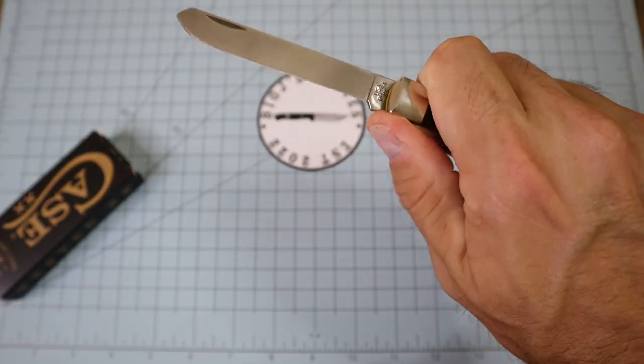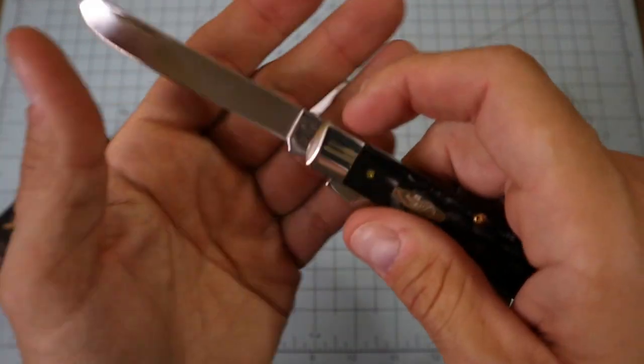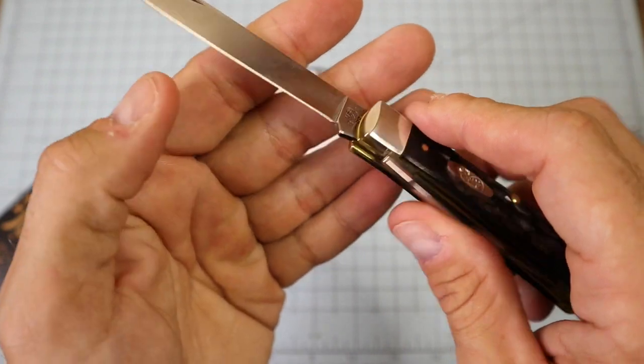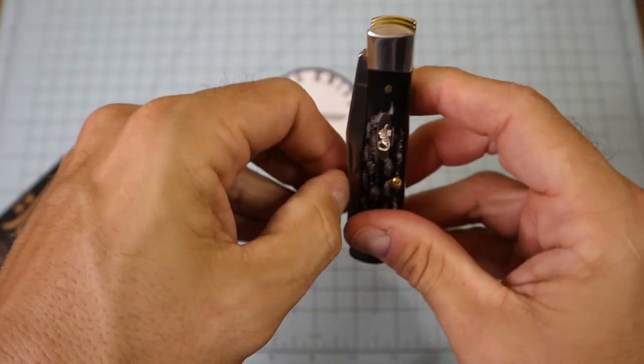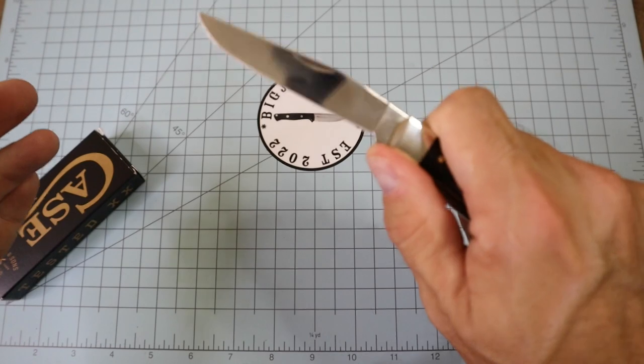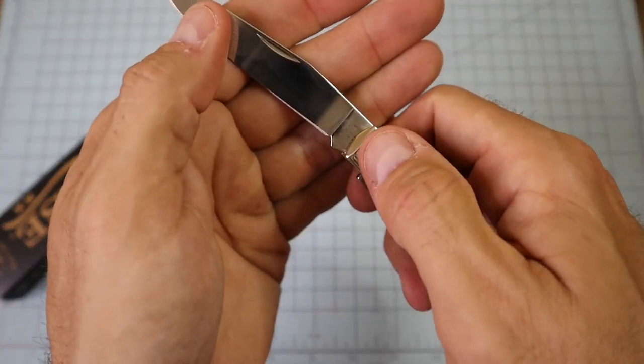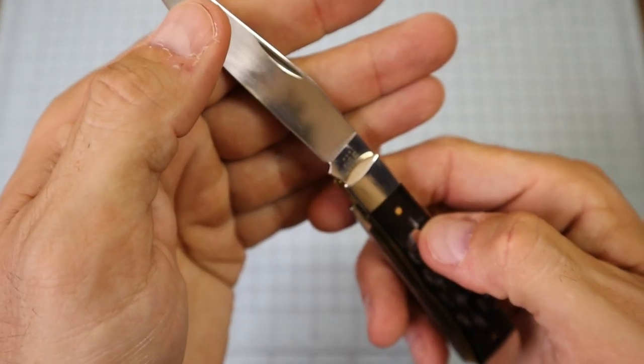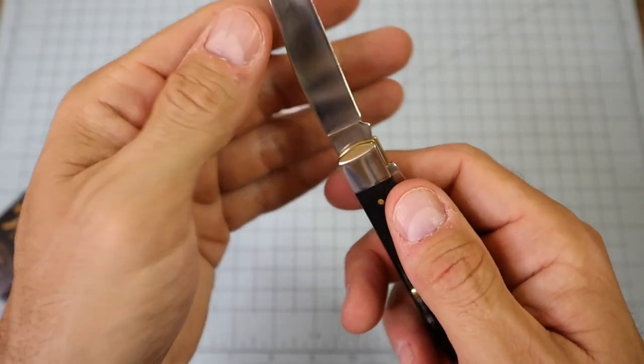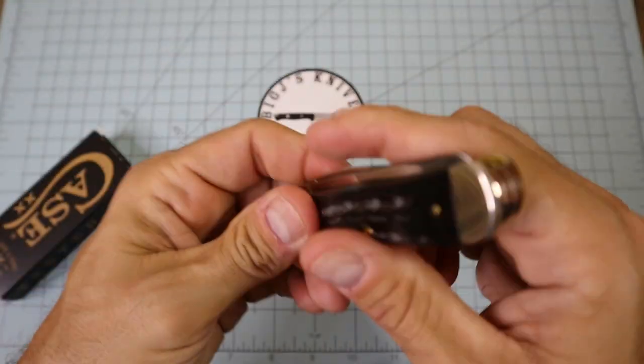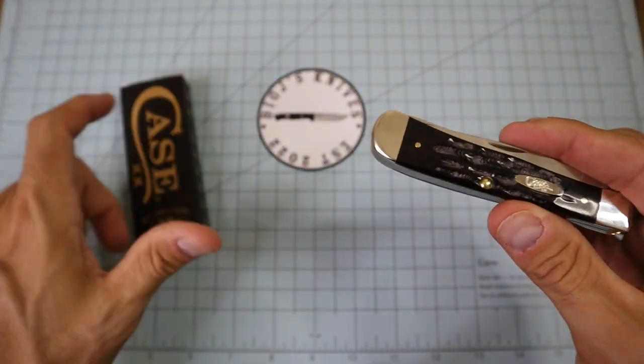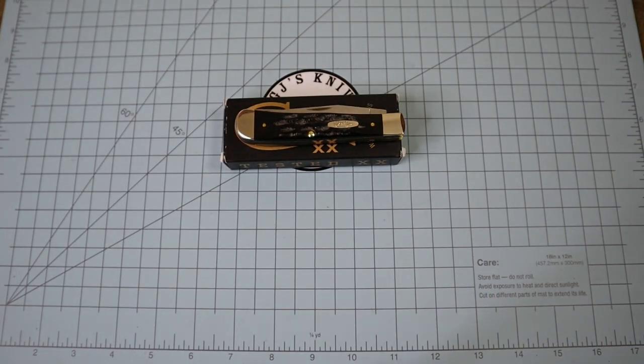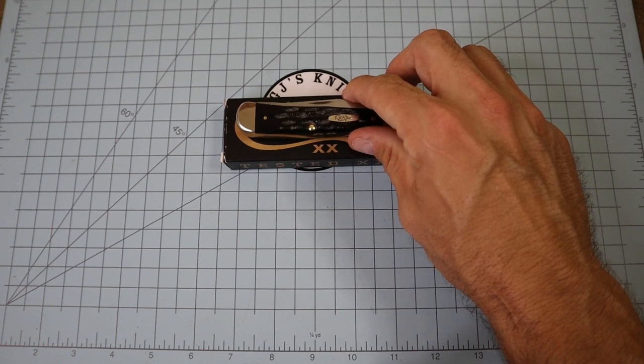She got some decent walk and talk behind her. You got your tank stamp there, nothing on the opposite side. Let's check your clip point here - you got your Case double X with your seven Xs and dot. I really can't tell. It's blank on the opposite side as well. Guys, this is it, this is my brand new Case full-size trapper in buffalo horn.